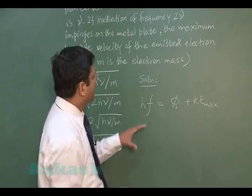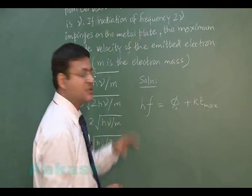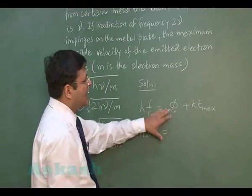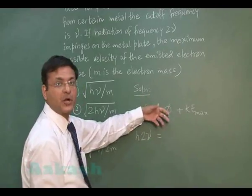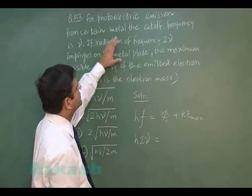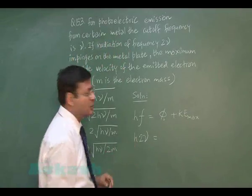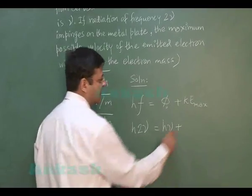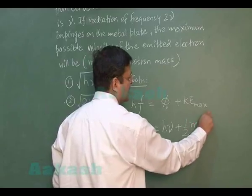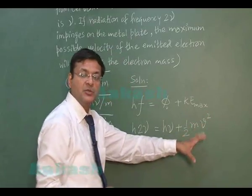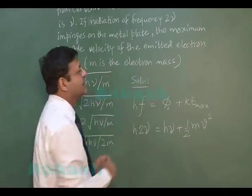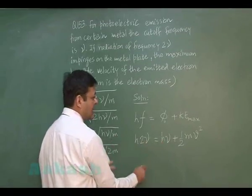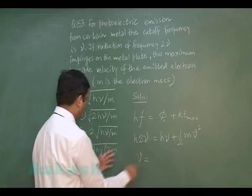Using Einstein's photoelectric equation: energy of incident radiation equals work function plus maximum kinetic energy. The incident frequency is 2ν, so energy = h(2ν). The work function φ = hν (since cutoff frequency is ν). Maximum kinetic energy is ½mv²max. This gives: h(2ν) = hν + ½mv²max.